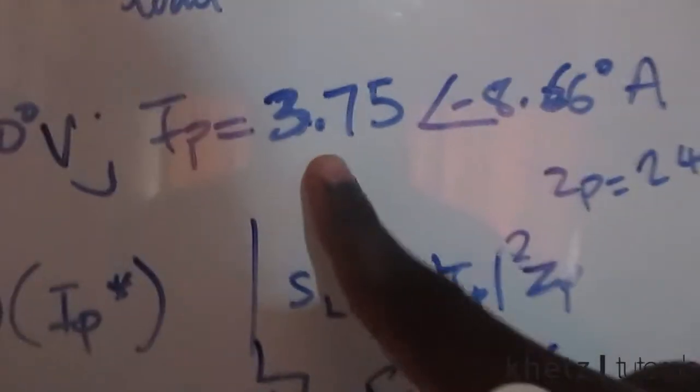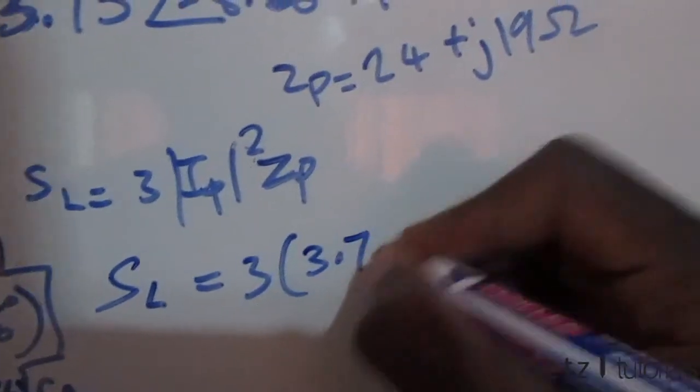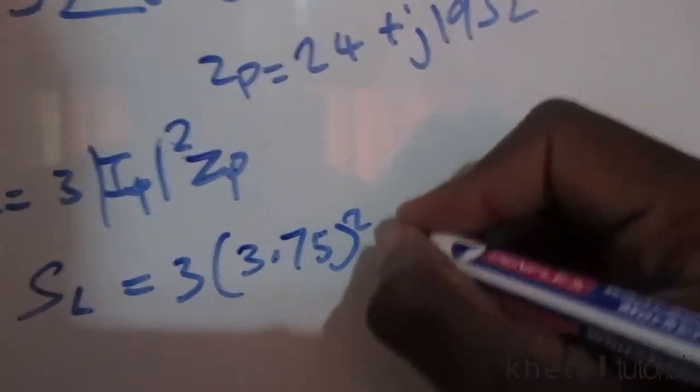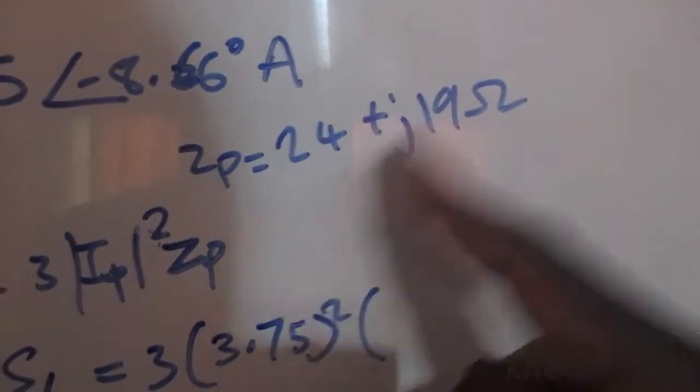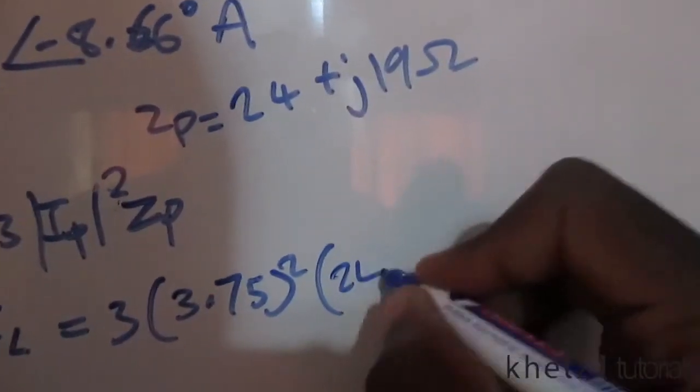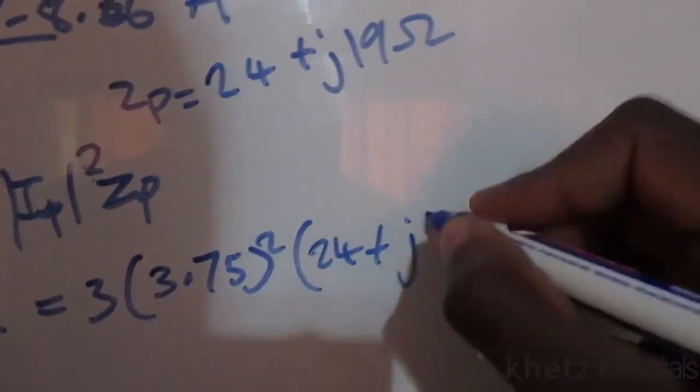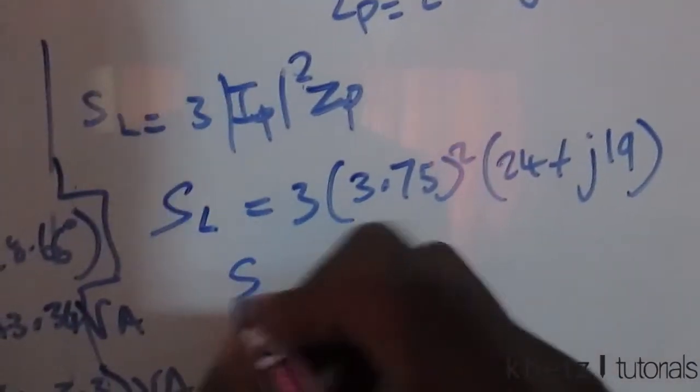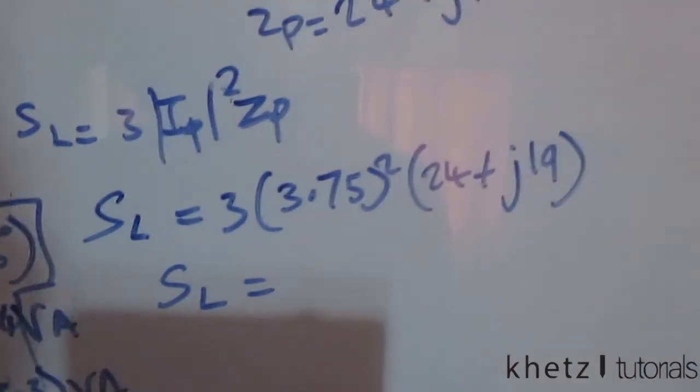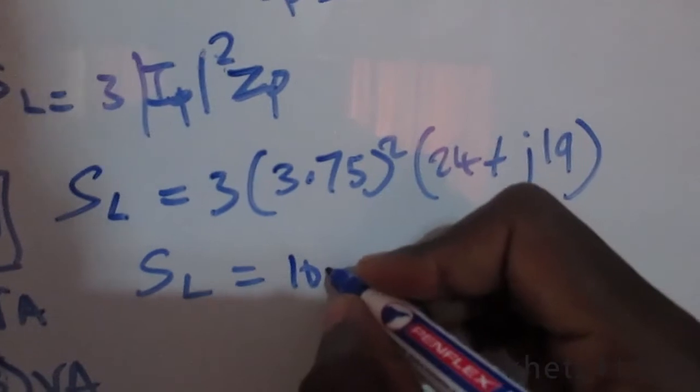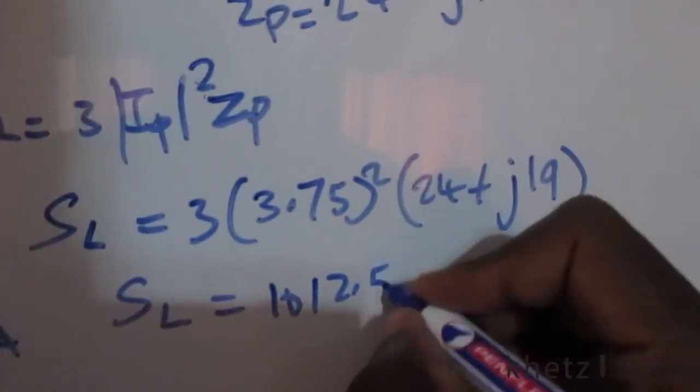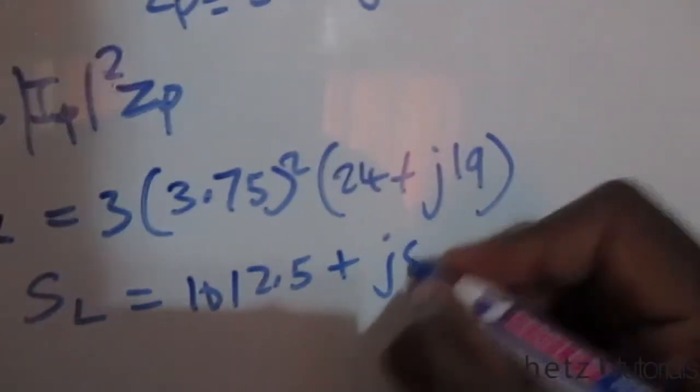To find the complex power at the load, it's going to be SL = 3|Ip|²Zp. The magnitude of the phase current is 3.75, so you square it and multiply by your phase impedance, which is 24 + j19. The answer you should get is 1012.5 + j801.56 VA.